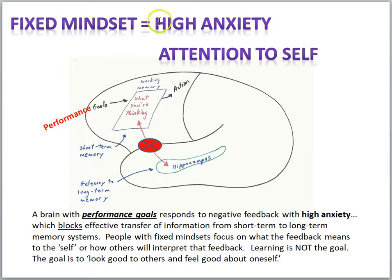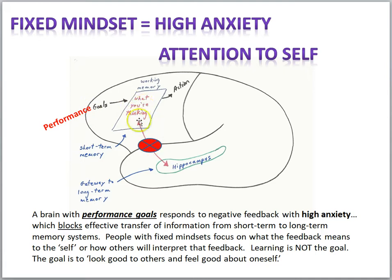So we could say fixed mindset individuals have high anxiety, and that high anxiety is an impediment — it will interfere with learning because the attention systems will be redirected to the self. If you have performance goals and you get negative feedback, the attention systems can no longer effectively transfer the correct answer into long-term memory because they're worried about the self and your self-image. So a brain with performance goals responds to negative feedback with high anxiety, which blocks effective transfer of information from short-term to long-term memory systems. People with fixed mindsets focus on what the feedback means to the self, or how others will interpret that feedback. Learning is not the goal — the goal is to look good to others and feel good about oneself.